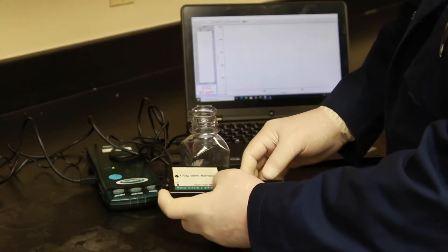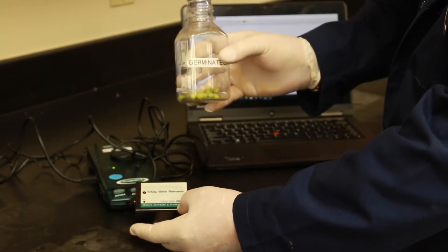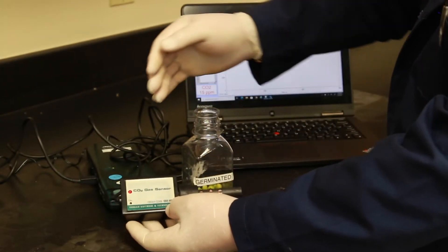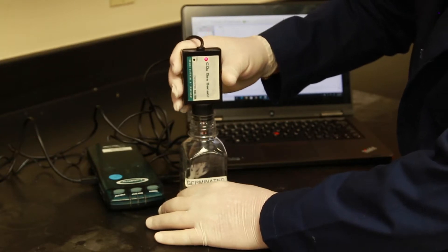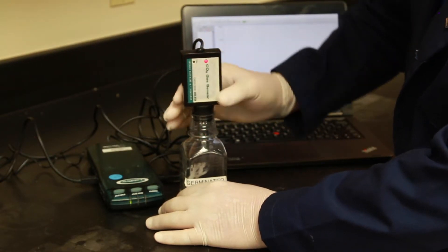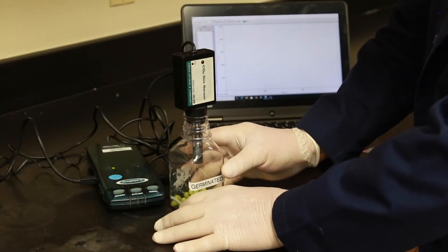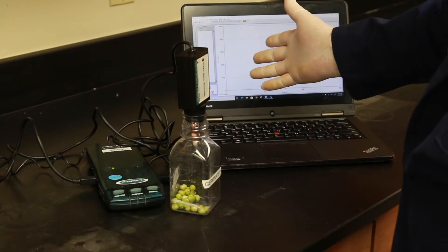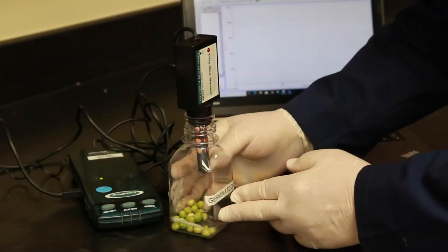Here we have the Vernier LabPro CO2 sensor. This is going to be inserted into the mouth of the plastic flask. Once this has been inserted into the mouth of the plastic flask we then have to allow the flask to equilibrate and we will allow the CO2 sensor to sit for one to two minutes. While the CO2 sensor is equilibrating to the software on our laptop computer we will begin taking measurements.